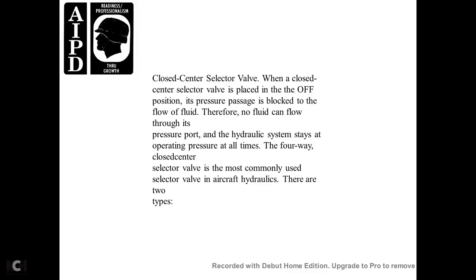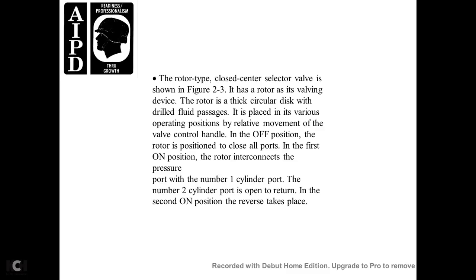Closed-Center Selector Valve. When a closed-center selector valve is placed in the off position, the pressure passage blocks the flow of fluid; therefore, the hydraulic system stays at operating pressure at all times. The four-way closed-center selector valve is most commonly used in aircraft hydraulics. There are two types. The rotary-type closed-center selector valve shown in figure 2-3 uses a rotor as the valve device. The rotor is thicker than a circular disc and is drilled with passages placed in various positions relative to the movement of the valve control handle. In the off position, the rotor closes all ports. In the first on position, the rotor interconnects the pressure port with cylinder port number one, and cylinder port number two is open to return. In the second on position, the reverse takes place. The spool-type closed-center selector valve shown in figure 2-4 has a housing with four ports and a spool pilot valve. The spool is made from a round shaft with machined sections forming spaces to allow hydraulic fluid to pass through. The large-diameter portions of the spool are called lands. The operation of the spool valve is identical to the rotary type.